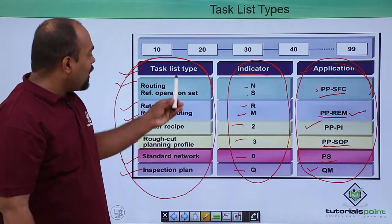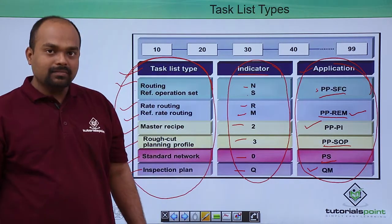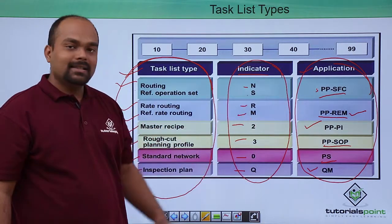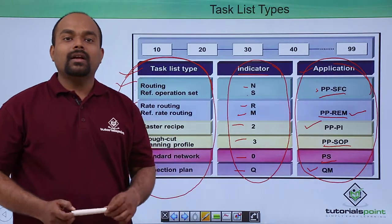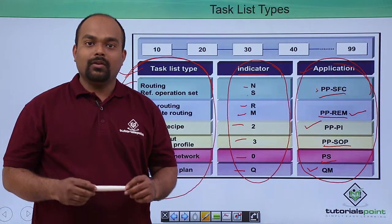These all are names of the task list. These are the indicators and these are the applications. In this video we have seen task list types. Thanks a lot.